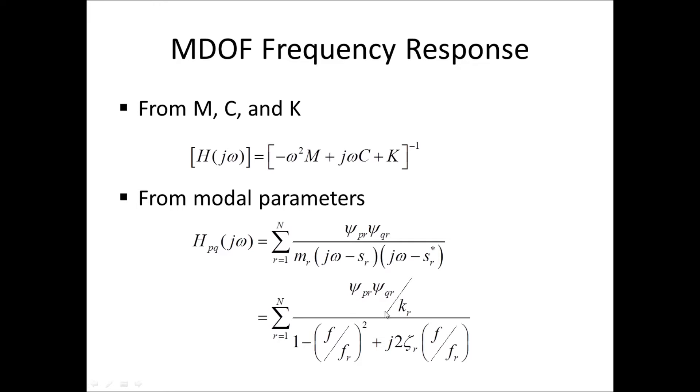where SR is the pole of mode R. This can also be written similarly by using this expression, psi PR times psi QR divided by KR, the modal stiffness, divided by 1 minus F over FR squared plus j2 zeta R times F over FR, and summed over all the modes.